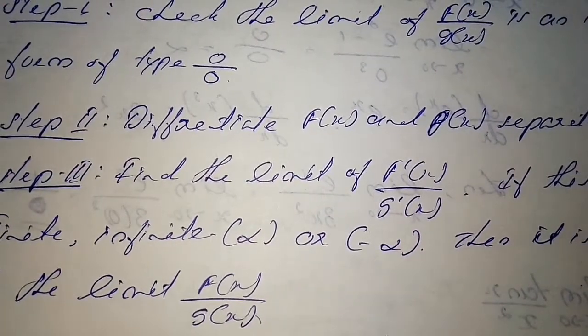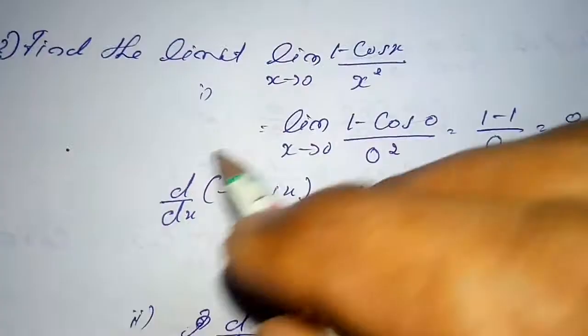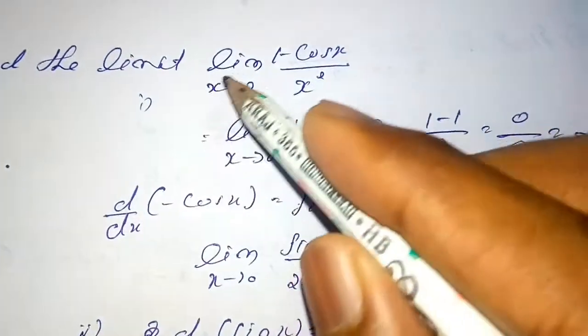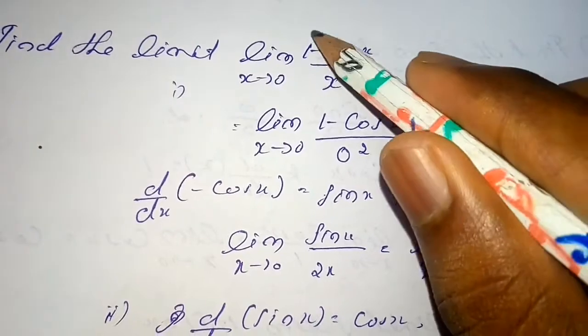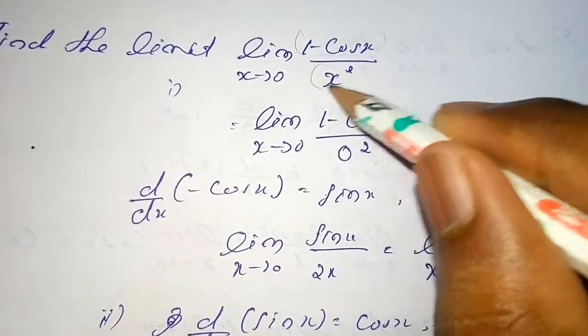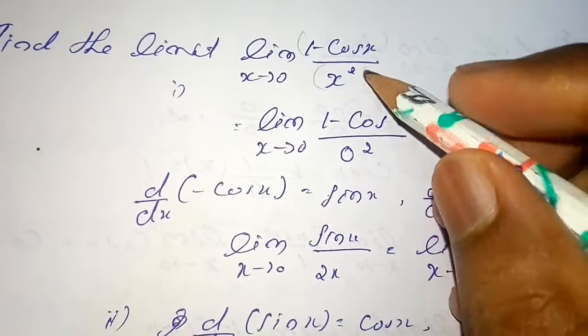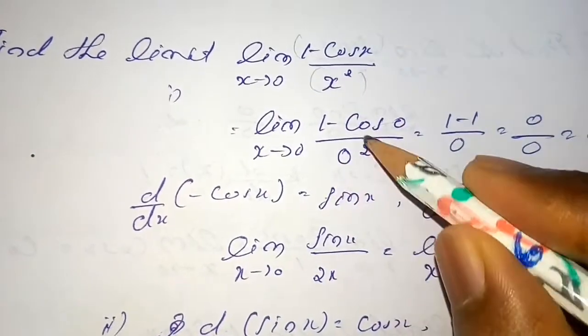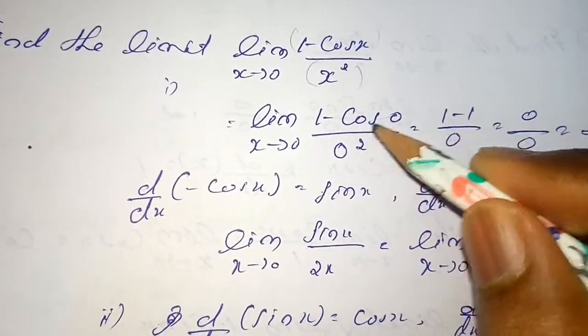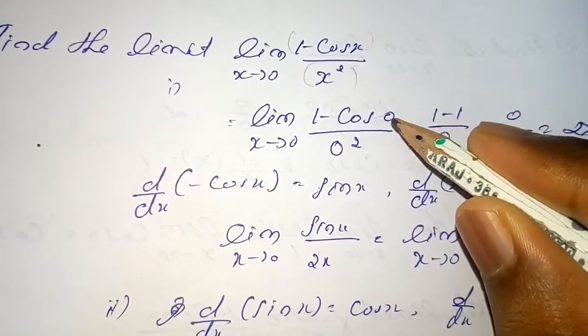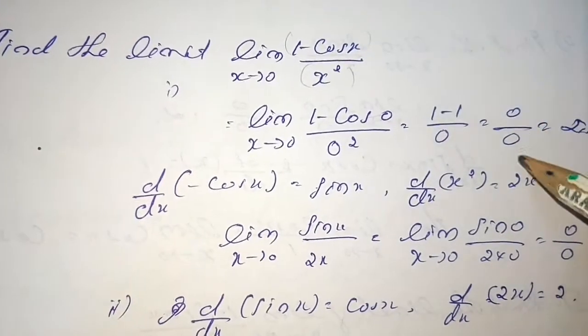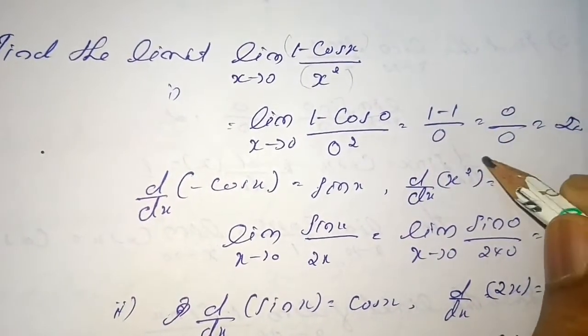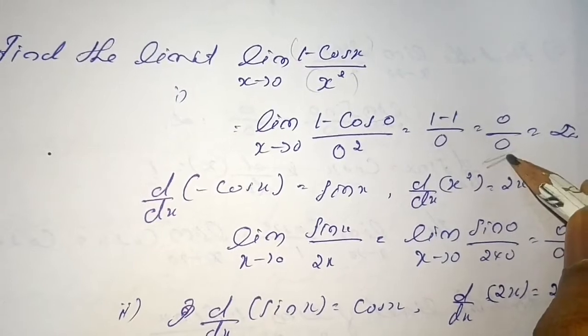Now let's go for an example. First we have to put the limit, and by putting it we will get (1-1)/0 = 0/0, so we have to apply L'Hospital's rule.